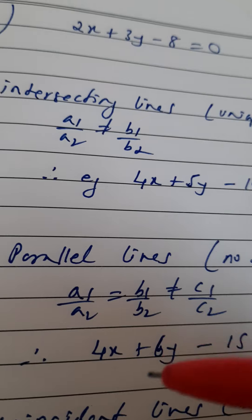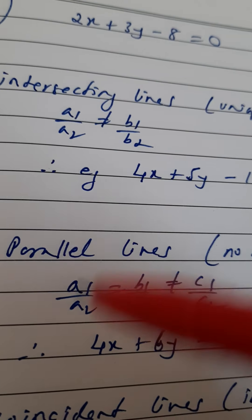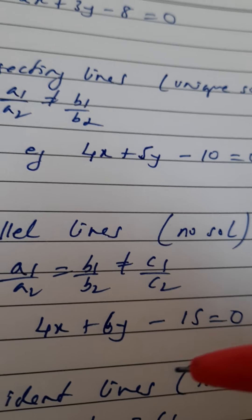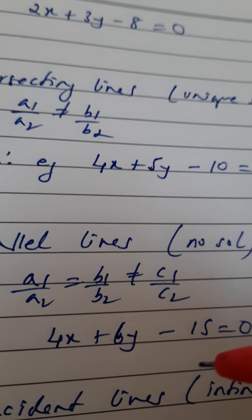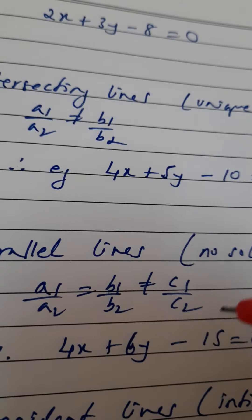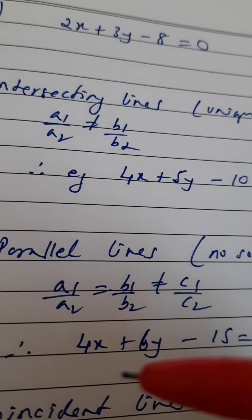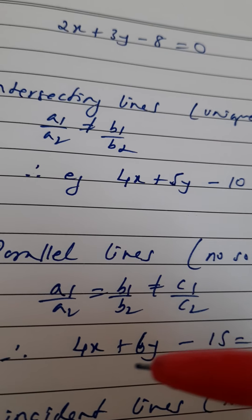So I have made this also 1 by 2. This is also 1 by 2 because 2 by 4 is 1 by 2, 3 by 6 is also 1 by 2. But when I look at the third term, this is 8 and this is 15—this is certainly not 1 by 2. So I have satisfied this condition. This will be the required answer. When I solve these two equations on a graph, I am going to get parallel lines.